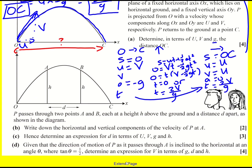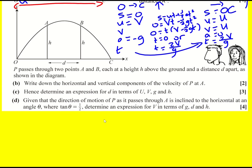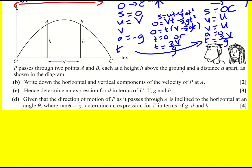Just to make a note: OC = 2UV/g. Next up we're told that P passes through A and B each at a height h above the ground and a distance d apart. As shown, we're asked to write the horizontal and vertical components of the velocity at A.